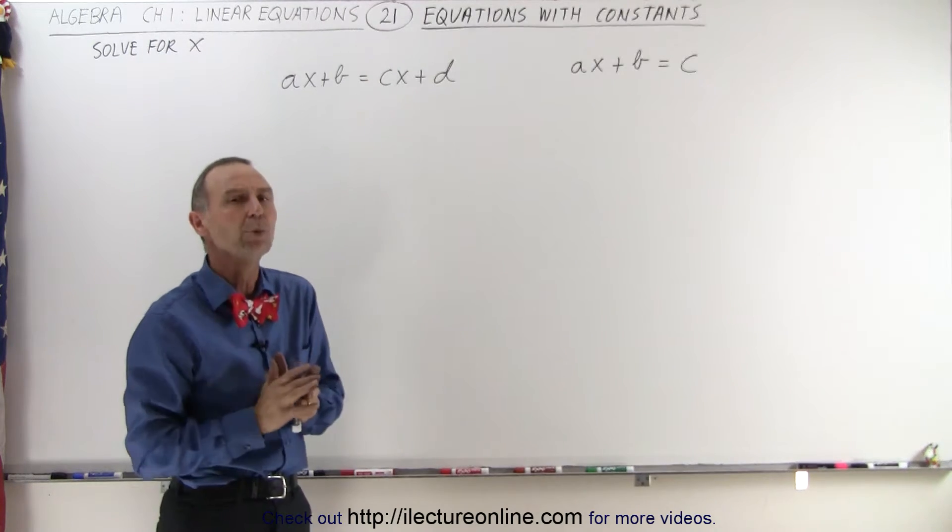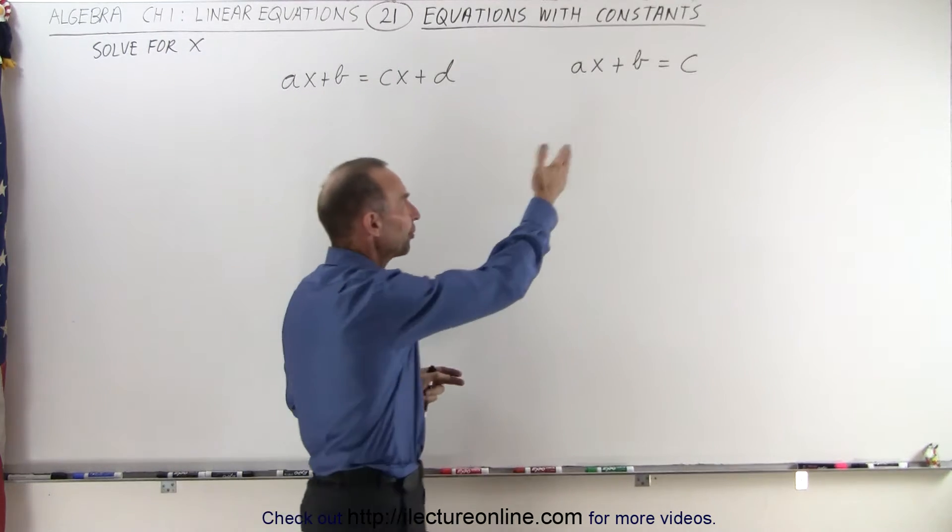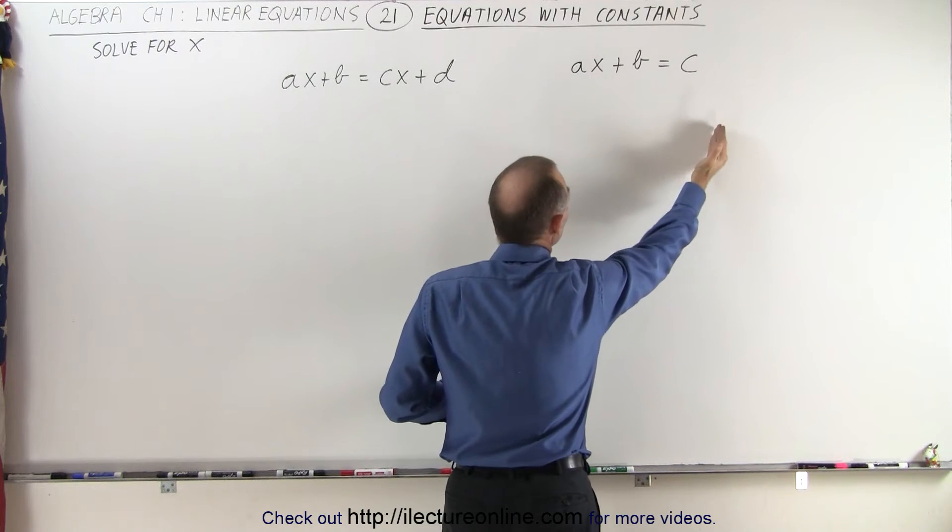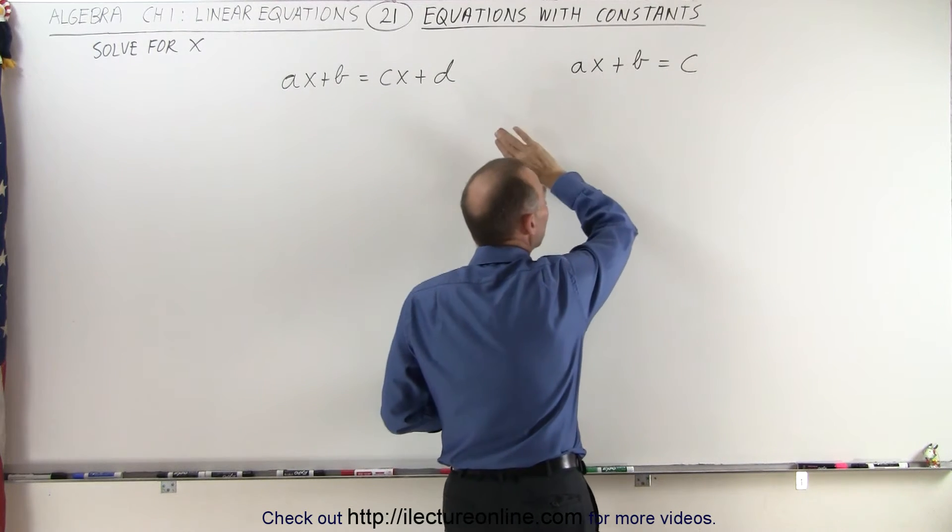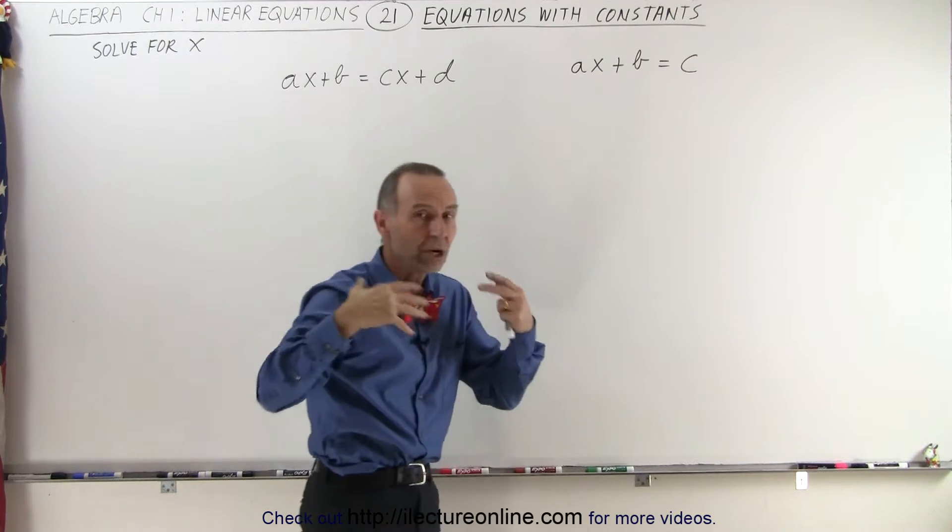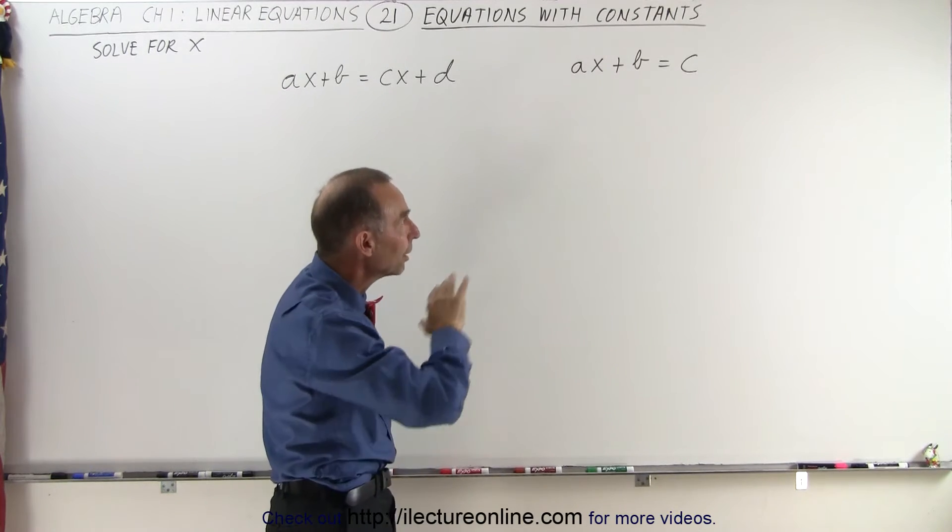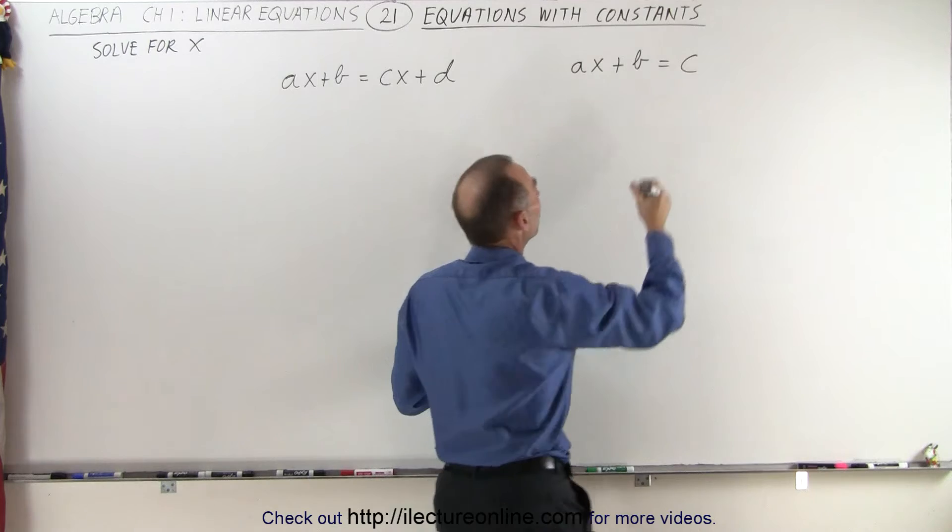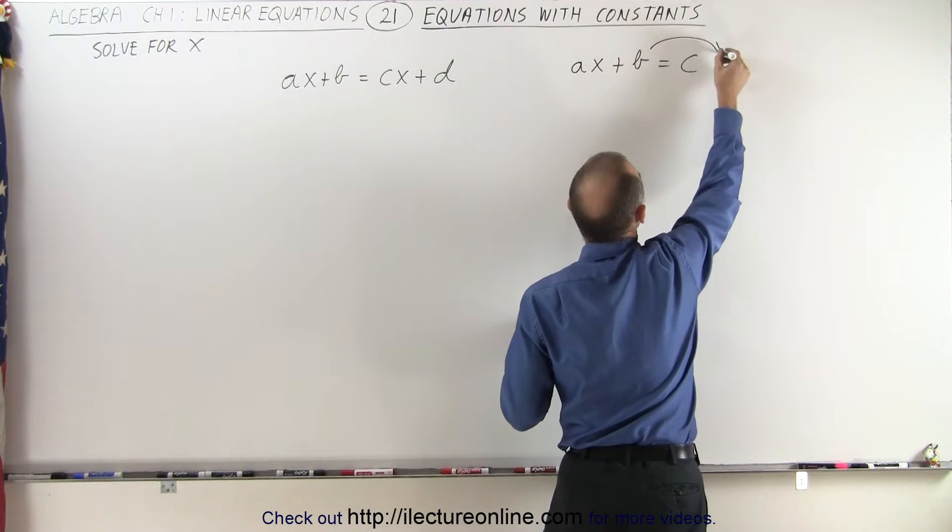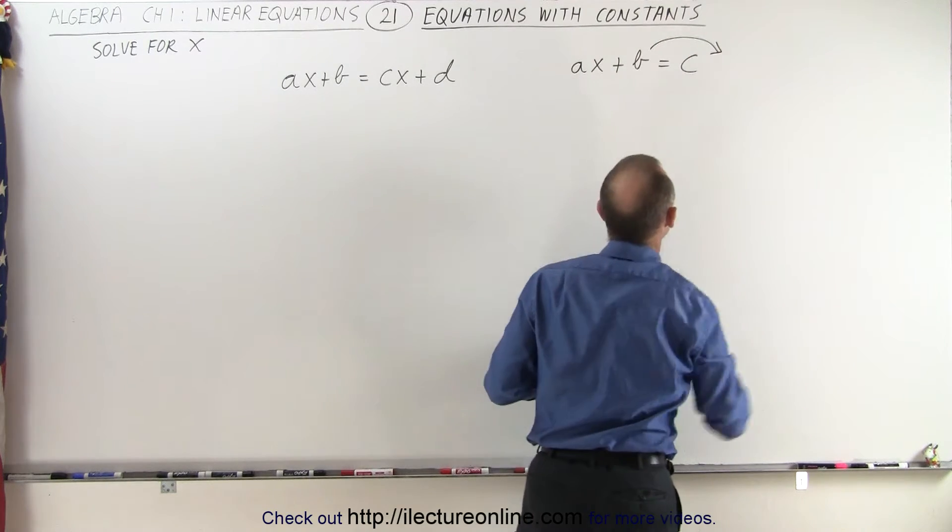We use the very same rules as before. For example, our first example here we make sure that all the terms of X end up on one side and all the numbers, the constants as we call them, end up on the other side. So in this case we're going to move B to the other side over here which then makes it a negative B on the right side.